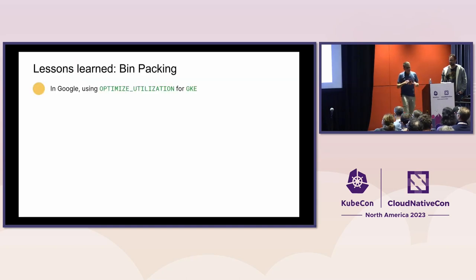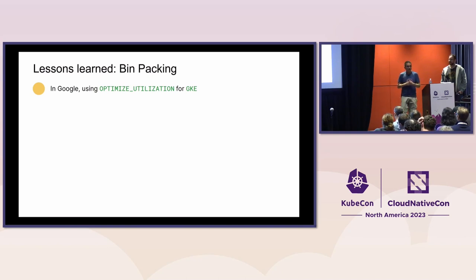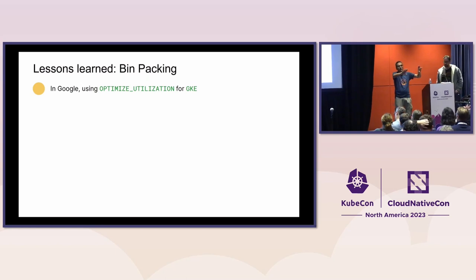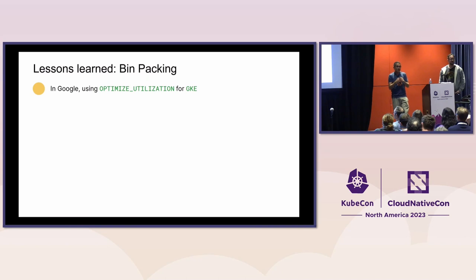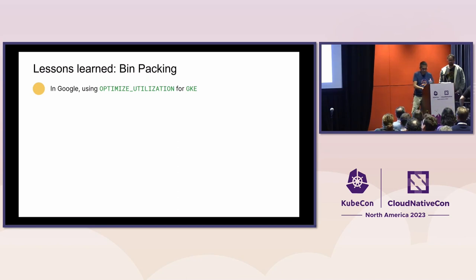We are talking about bin packing here, not right-sizing. That is, we're not talking about how well you're using the resources you request — we're talking about how well we're bin packing what you request onto the nodes you have available. In GKE, by default, the cluster runs with something called balance mode, which tries to do a fair distribution of pods over nodes. If you switch to optimize utilization — a cluster-wide setting — it will try to do bin packing. But if you don't have proper resource requests, you'll have pods smashing into each other instead of packing.